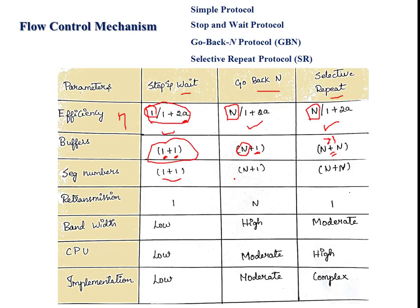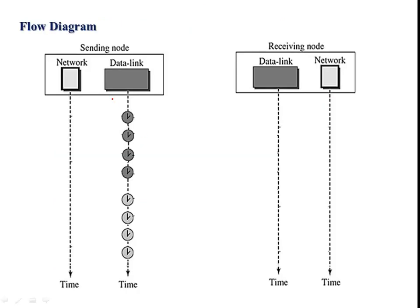The sequence numbers are the addition of both sender window size and receiver window size. Retransmission is an important thing to consider in these protocols, because for flow control we need to control the flow of packets from the sender to the receiver. In case the receiver capacity is less than the transmitter, the receiver will not be able to receive all packets effectively, so we use acknowledgement from the receiver. In stop-and-wait, only one packet is actually transmitted.